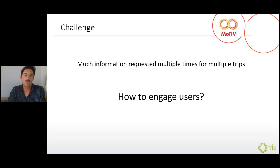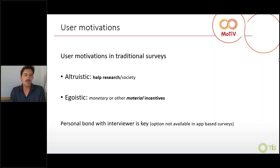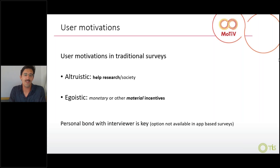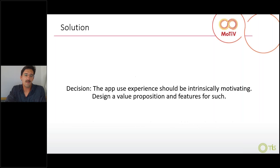This was a huge challenge. User motivations to respond to traditional surveys are of two types: altruistic and egoistic. Altruistic means helping research and helping society. Egoistic is more about material incentives, monetary or otherwise. Another important factor in traditional surveys is the personal bond with the interviewer — success rates are much higher when speaking to a real person, and we don't have that with apps, which are very impersonal.